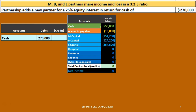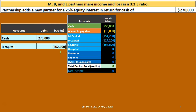We also know the new partner is entering the partnership and put in $270,000. You would think we'd credit the new partner's capital account for the investment — which we will — however, we will not credit for $270,000. In this case we're going to credit for $202,500. Why? That's the question. How do we come up with that? Let's do our worksheet to answer that question.